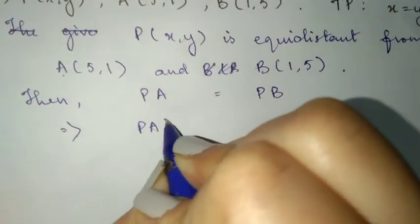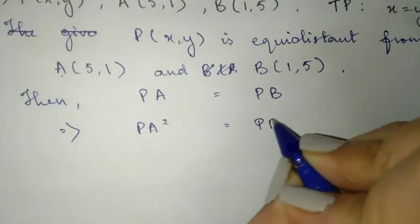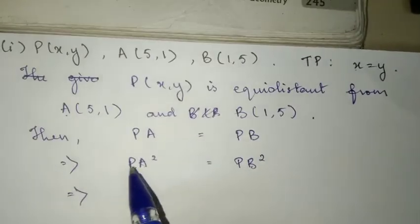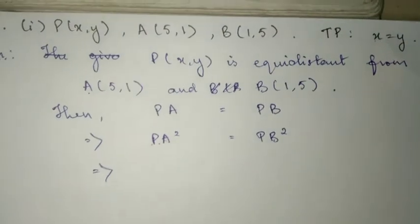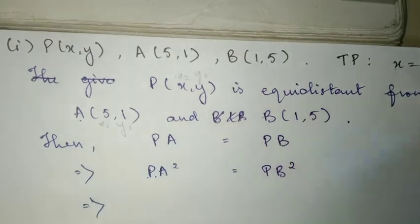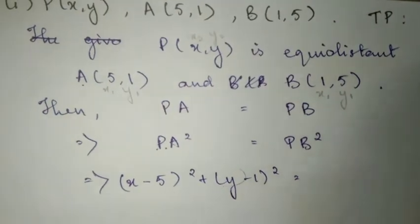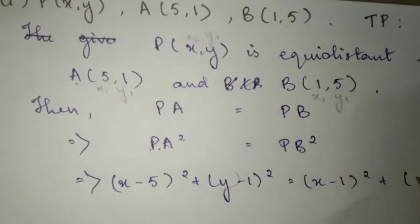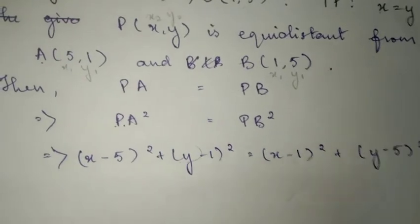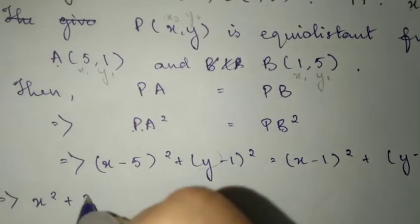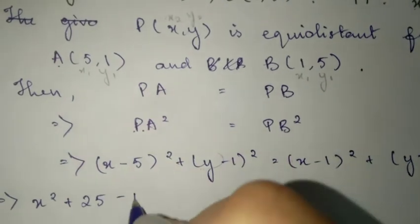So we'll use the distance formula here. Since PA is equal to PB, we label the coordinates as x1, y1, x2, y2 and substitute them into the formula. We expand and get: x² + 25 - 10x plus y² + 1 - 2y on one side, and x² + 1 - 2x plus y² + 25 - 10y on the other side.